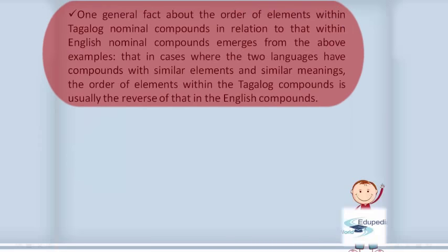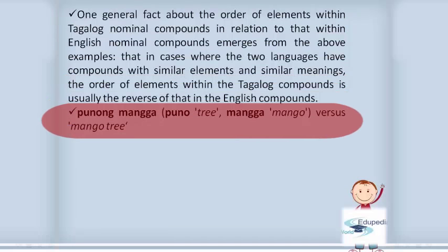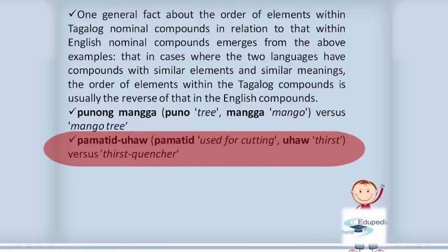One general fact about the order of elements within Tagalog nominal compounds in relation to English nominal compounds emerges from the above examples: in cases where the two languages have compounds with similar elements and similar meanings, the order of elements within the Tagalog compound is usually the reverse of that in the English compound. For example, 'punong mangga' (puno = tree, mangga = mango) versus English 'mango tree'; 'pamatid uhaw' (pamatid = used for cutting, uhaw = thirst) versus English 'thirst quencher.'